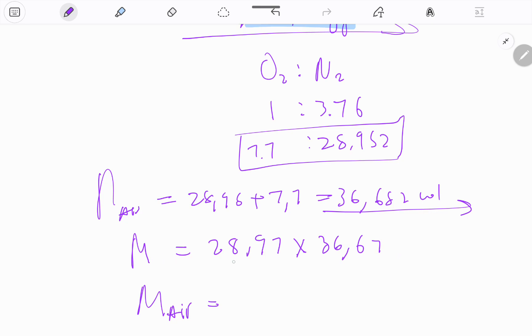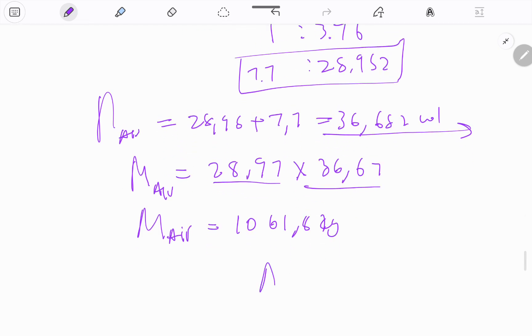We're supposed to multiply the molar mass by the number of moles, which is 36.652. Mass of air is multiplying the molar mass with the number of moles.